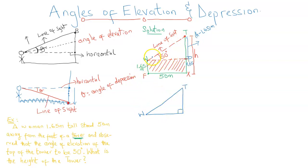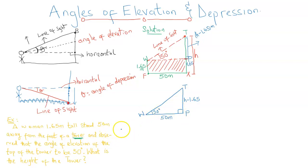So our interest is to obtain the height of the tower, and I am just going to focus on this triangle here — triangle TPW. The angle at W is 50 degrees. TP is H minus 1.65 meters, and WP of course is going to be 50 meters, because WFXP is a rectangle and opposite sides of a rectangle are equal. This is where the trig functions come in. We've got the sine, the cosine, and the tangent. The sine is the ratio of the opposite to the hypotenuse, the cosine is the ratio of the adjacent to the hypotenuse, while the tangent is the ratio of the opposite to the adjacent.